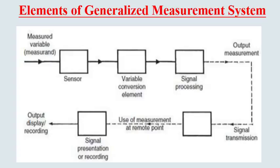The elements of a generalized measurement system: The primary sensing element sends a signal, which is transmitted to the variable conversion element where conversion is carried out. From the conversion element, it goes to the manipulation element, then to the processing element, and finally to the transmission system, from which it is presented as output. We will see each element in detail in the next slide.